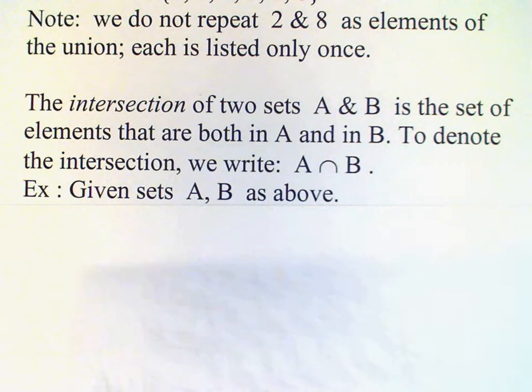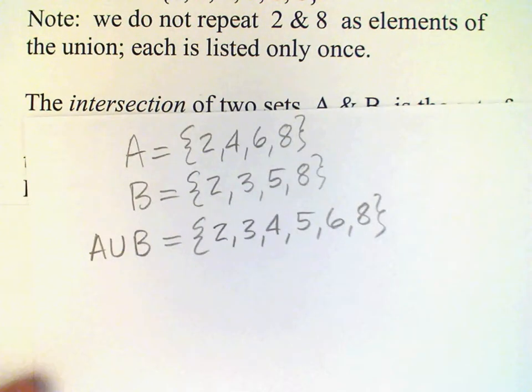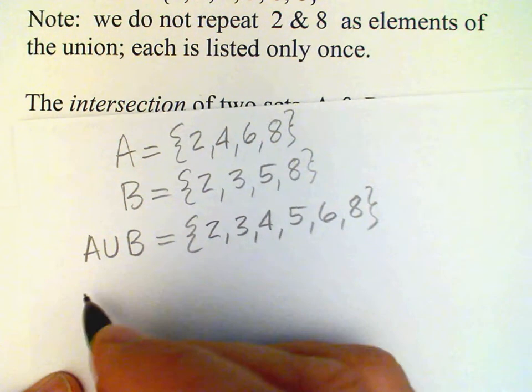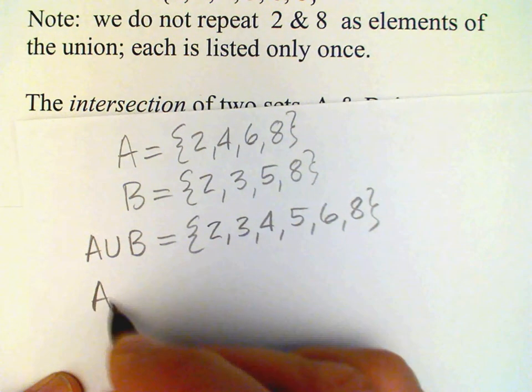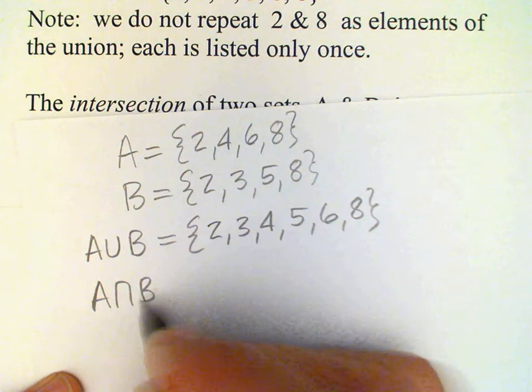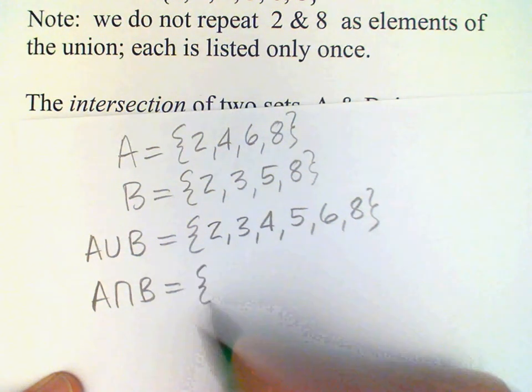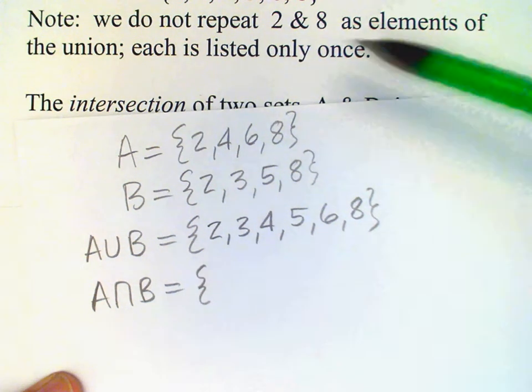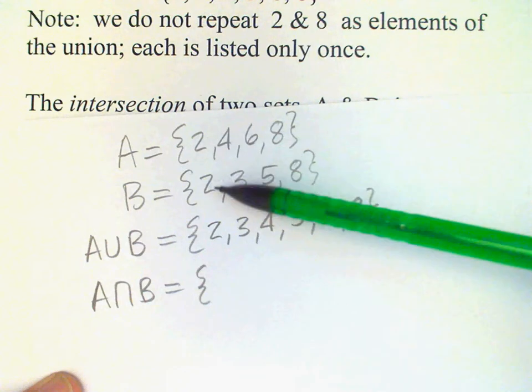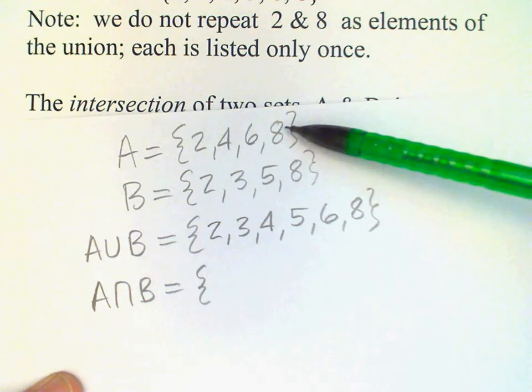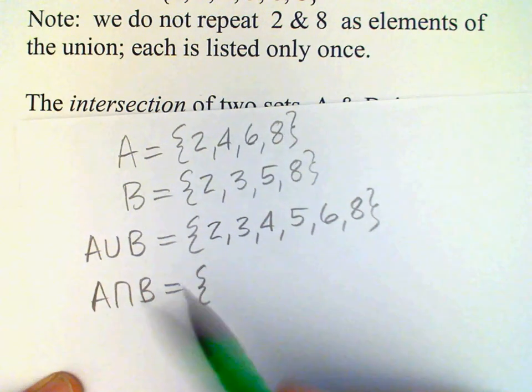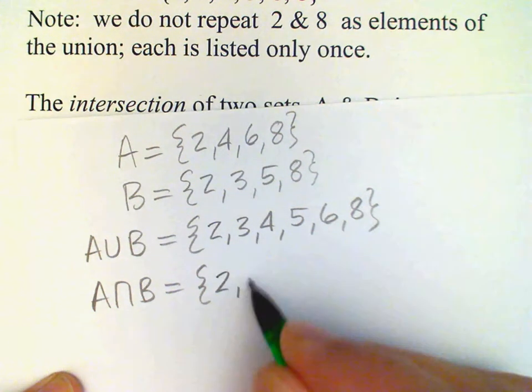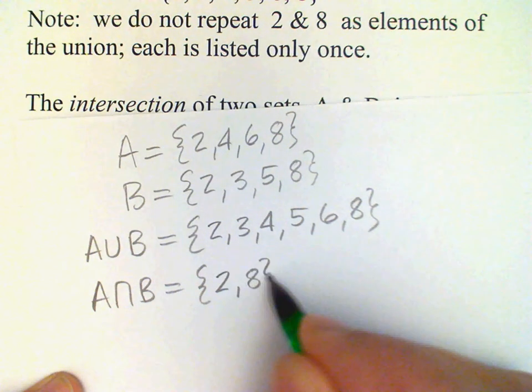So for example, the same two sets we had before, A and B. If we want to form the intersection of those two sets, A intersect B, then we look and see which elements are common to both sets. And we see 2 is in both, and 8 is in both. So the intersection of A and B would be simply the set 2, 8.